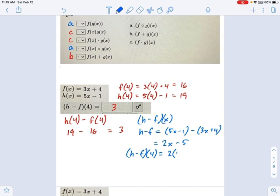And then do the h minus f evaluated at 4, which means 2 times 4 minus 5, and that equals 8 minus 5, which gives us 3. Same exact answer.